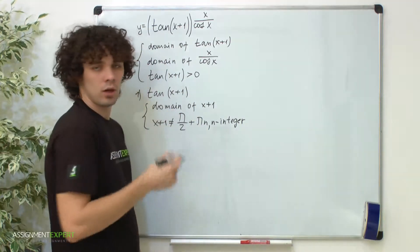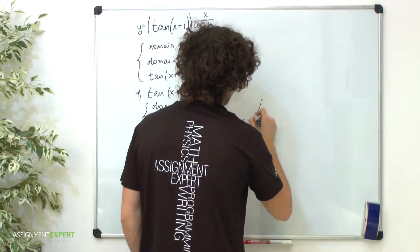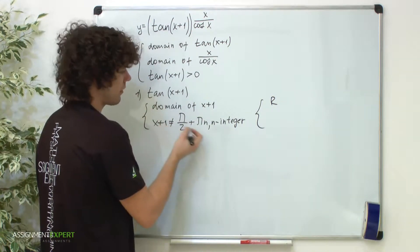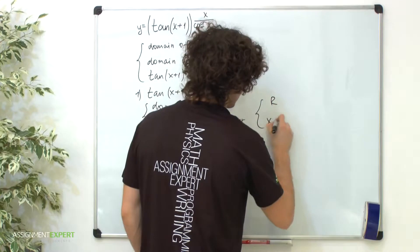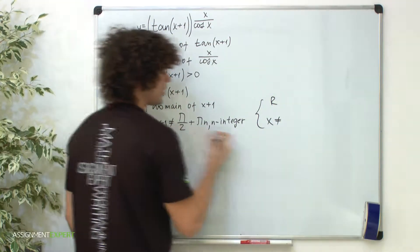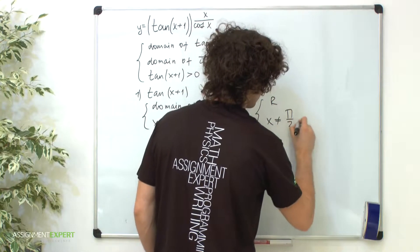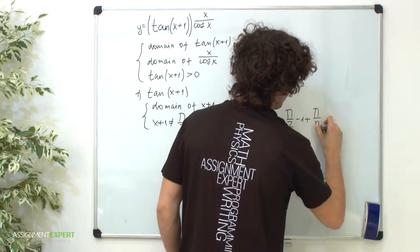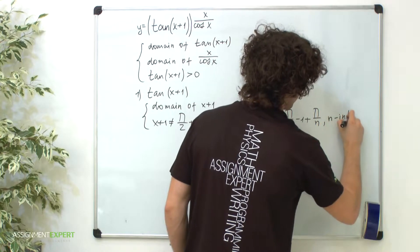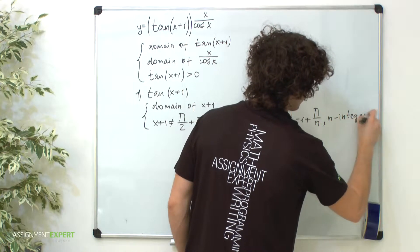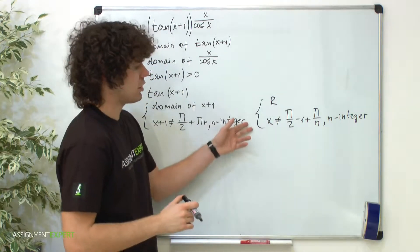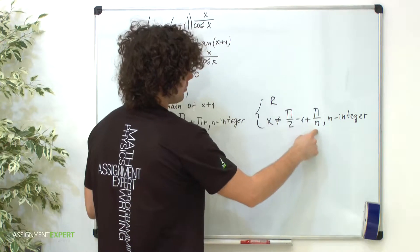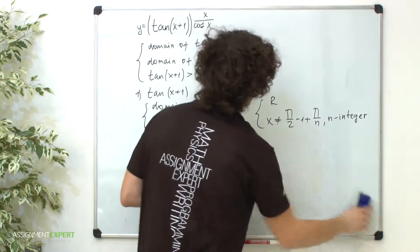The first condition gives us the whole set of real numbers ℝ. And here we subtract 1 from both parts of this inequality to get x is not equal to π/2 minus 1 plus πn where n is an integer. And this system gives us the result: x is not equal to π/2 minus 1 plus πn where n is an integer.